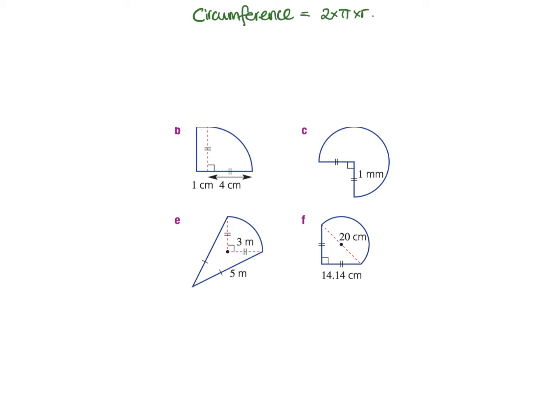With these composite shapes, what you're going to do is, when you're finding the perimeter, you have to add up all the sides.